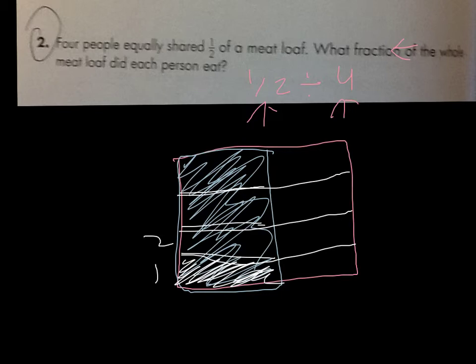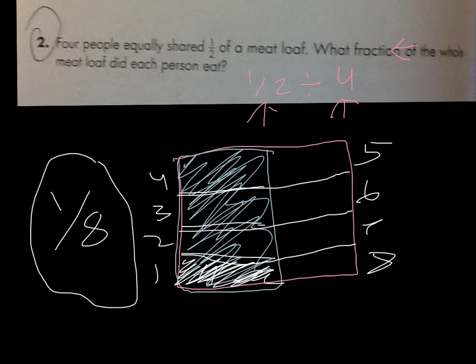One, two, three, four, five, six, seven, eight. There are eight pieces, so we know that eight is our denominator. Since we filled in one piece, we know that one is our numerator. The answer would be one-eighth of the meatloaf.